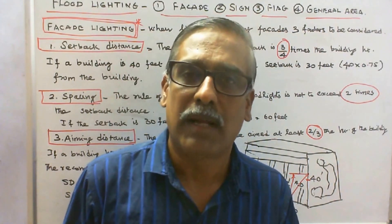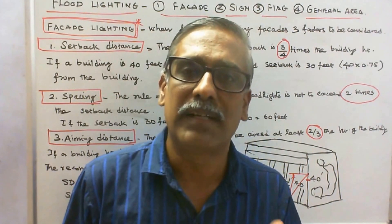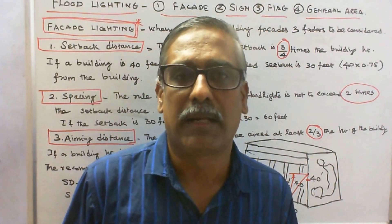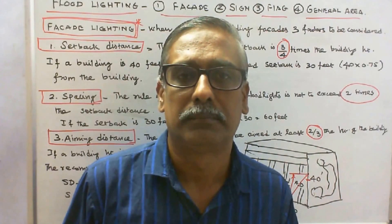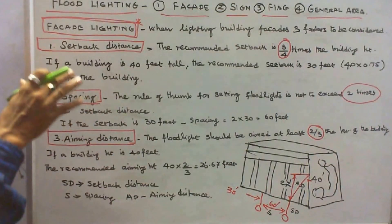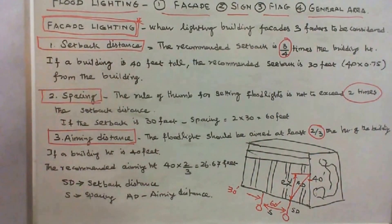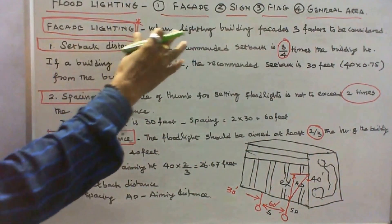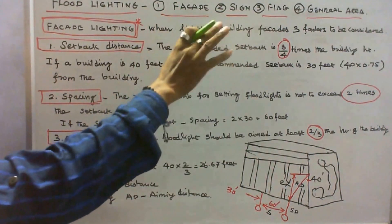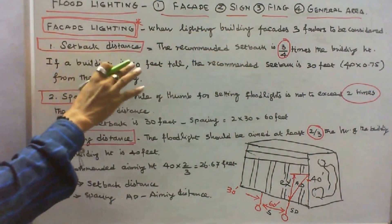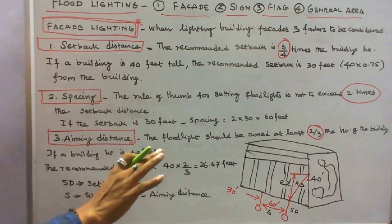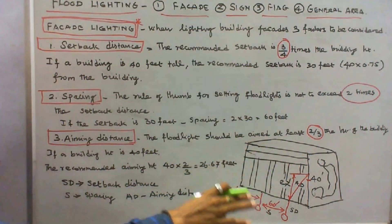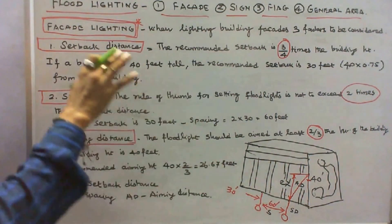The first is facade lighting. Facade means the front side of a building. Now we will see the thumb rules of facade lighting. When lighting a building facade, three factors should be considered. The first is setback distance. The distance between the building and the projector at ground level is called setback distance.